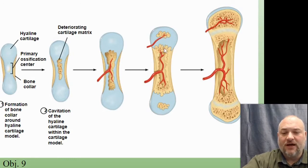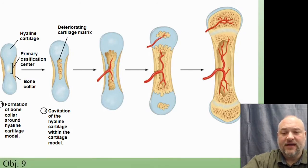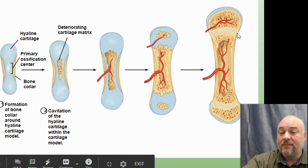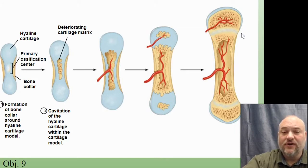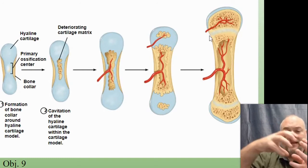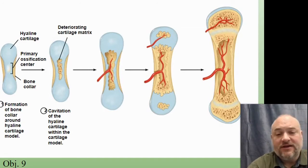We have a couple more locations of bone formation towards the epiphyses, as opposed to just the diaphysis of this long bone. At birth, we have pretty much solid bones in the diaphysis and the two epiphyses, with cartilage still present at the epiphyseal plate or growth plate. This is where bones grow — new cartilage grows in, then gets replaced by bone, cycling to lengthen the bones.